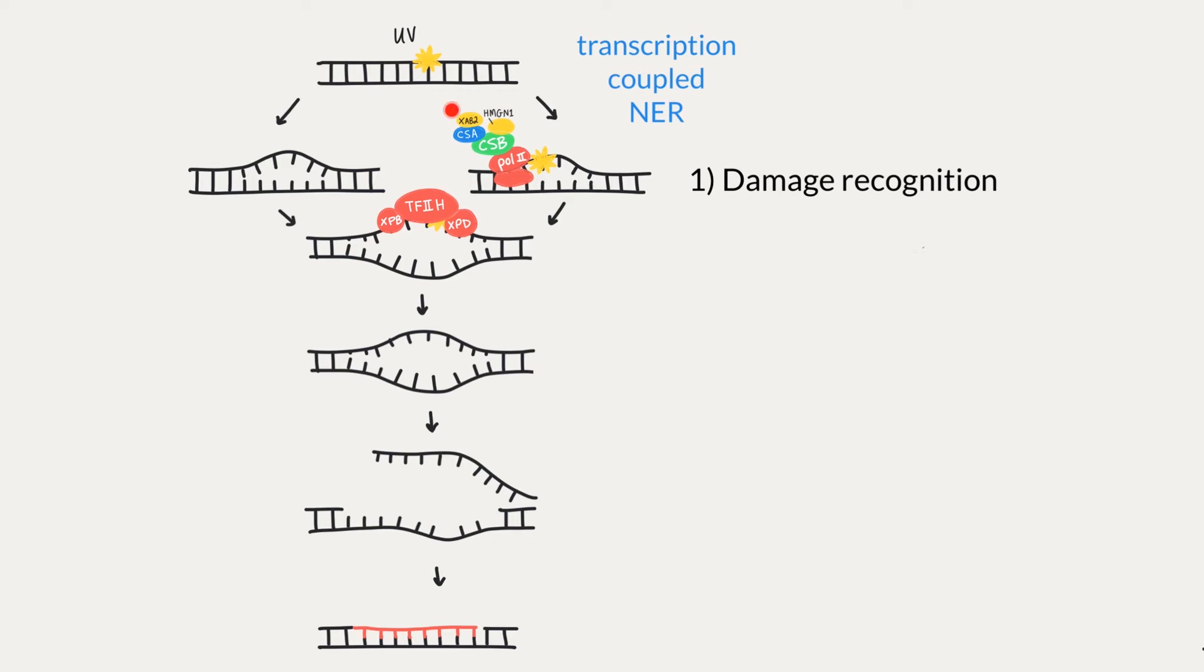CSB strongly binds to the polymerase when it's blocked at a lesion and changes the DNA conformation by wrapping the DNA around the protein itself. CSB recruits the CSA complex and other nucleotide excision factors. CSA is required for the recruitment of XAB2 and nucleosome remodeling factor called HMGN1 and transcription initiation factor 2H to the repair site.